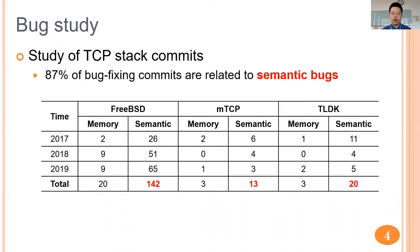To understand the proportion of memory bugs and semantic bugs in existing TCP stacks, we selected three open-sourced and widely used TCP stacks, including FreeBSD TCP, MTCP, and TLDK to study their commits. We first selected bug-fixing commits from January 2017 to December 2019, resulting in 201 commits, and then manually read each commit to identify whether it fixes memory bugs or semantic bugs. The table shows the study results: 87% of bug-fixing commits are related to semantic bugs, meaning most reported bugs in TCP stacks are semantic bugs.